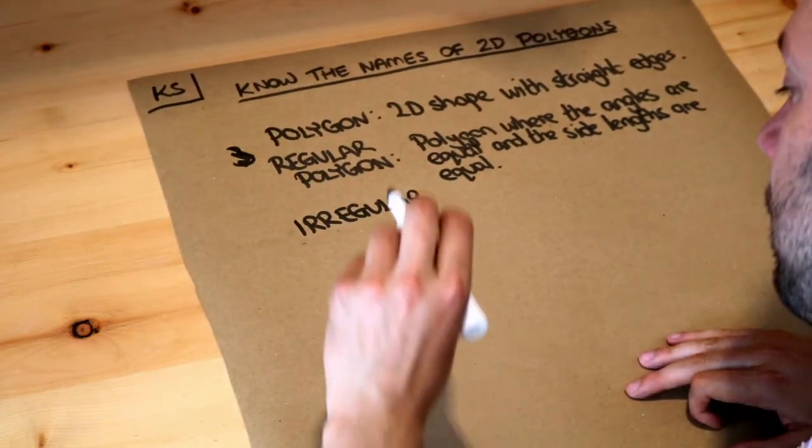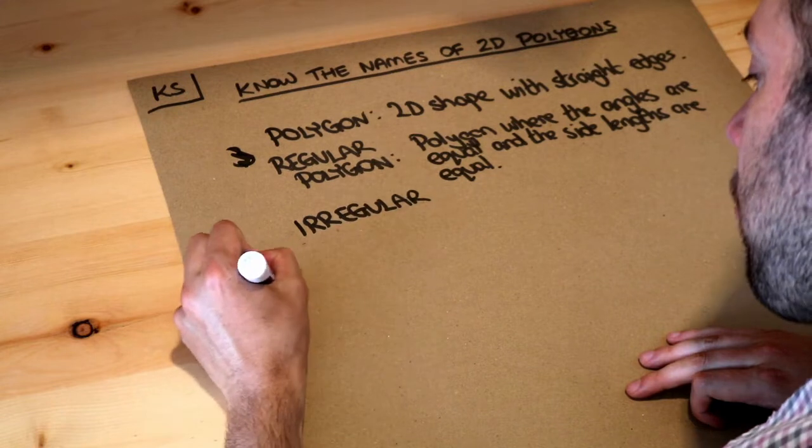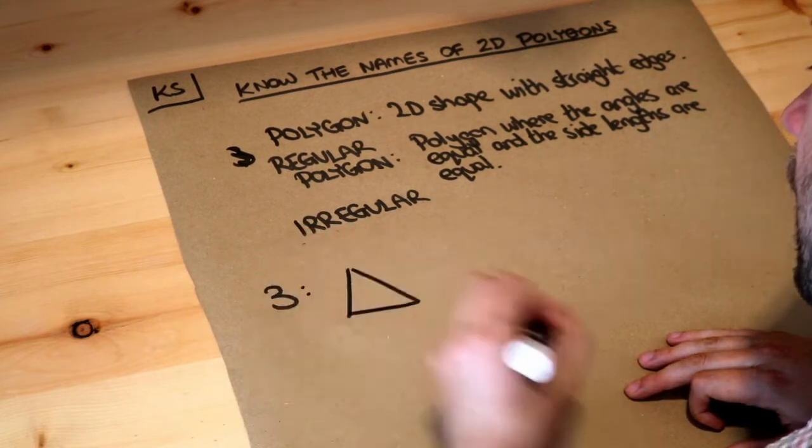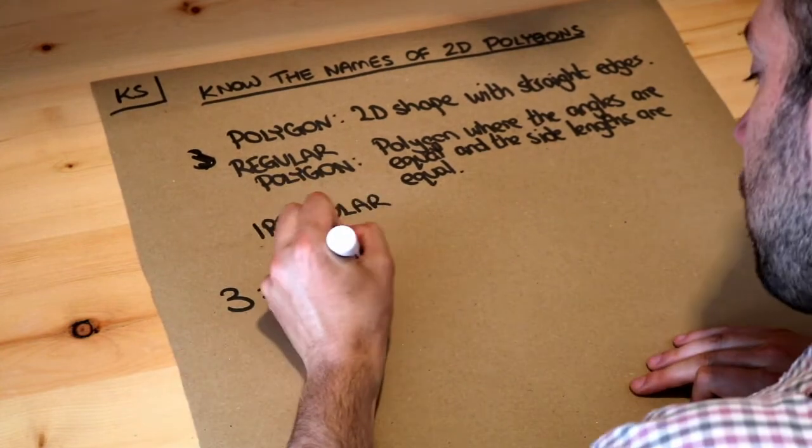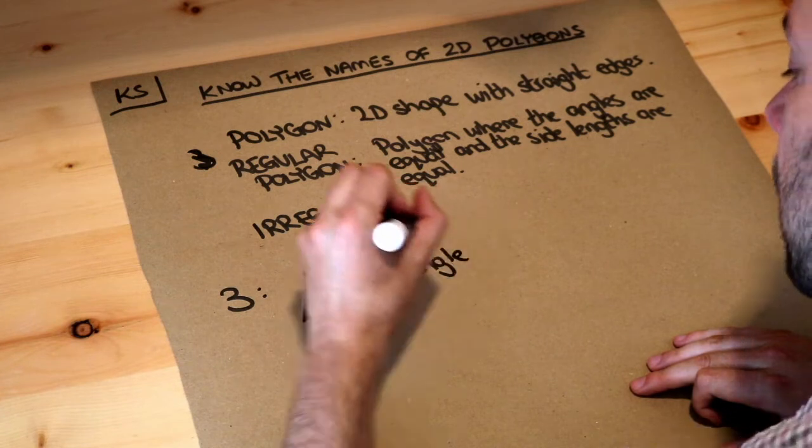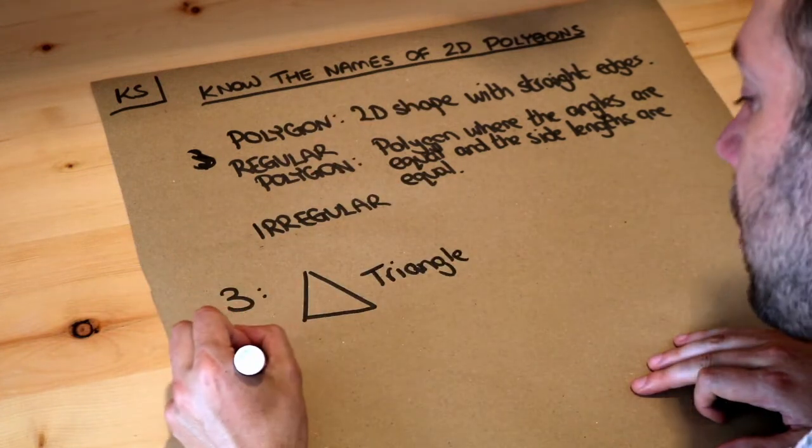Right so let's name these things. If I had a three-sided polygon it would look like this and that you might know is known as a triangle. And there's different types of triangles, scalene triangle, equilateral triangle which we cover in a separate video.